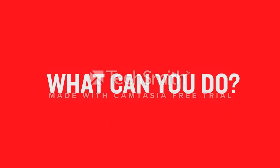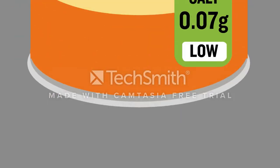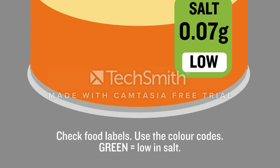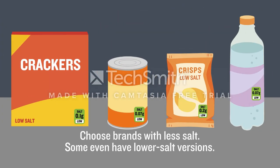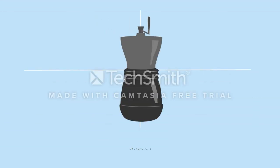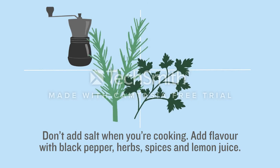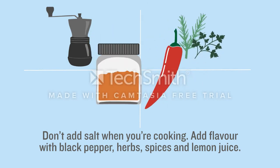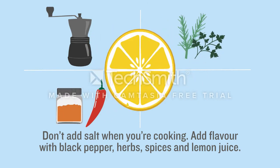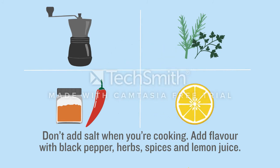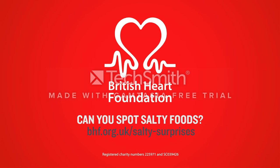What can you do? Check food labels and use the colour codes — green means low in salt. Choose brands with less salt; some even have lower salt versions. Don't add salt when you're cooking — add flavour with black pepper, herbs, spices, and lemon juice. Can you spot salty foods? Visit bhf.org.uk/salty-surprises.